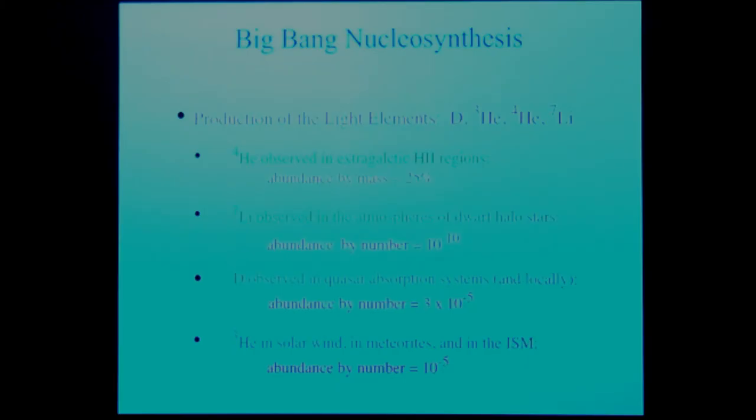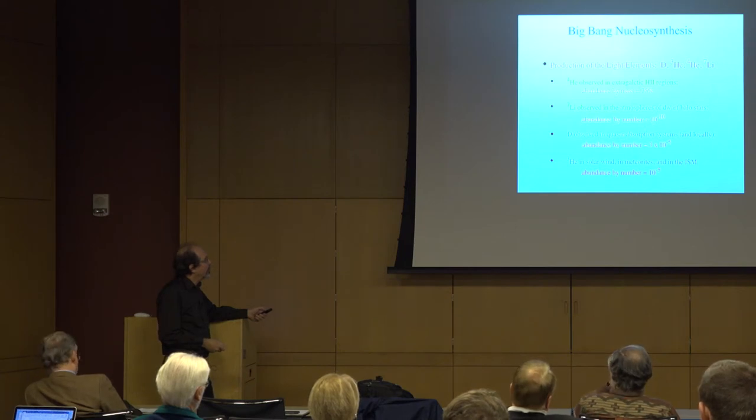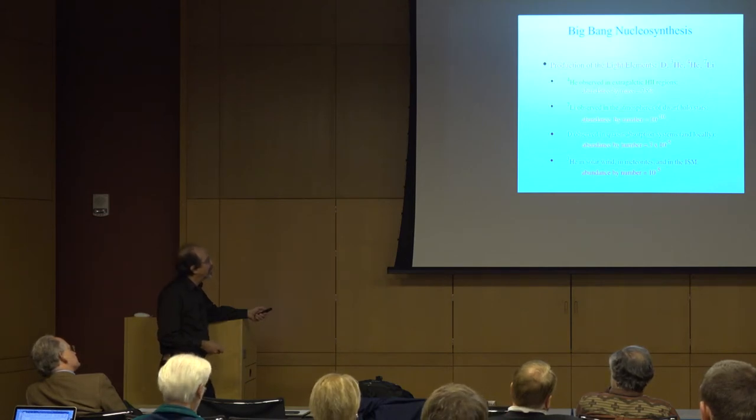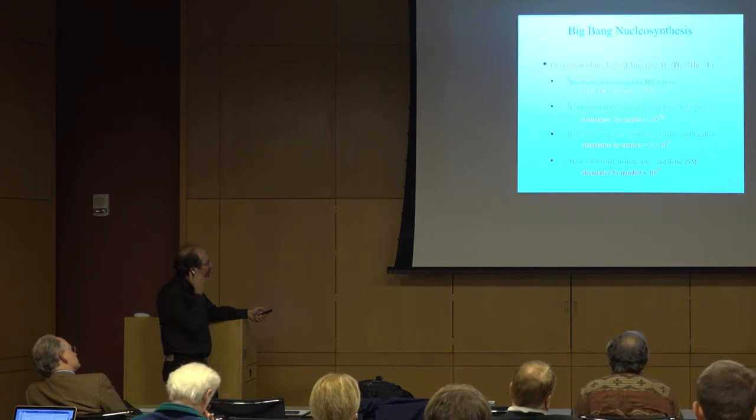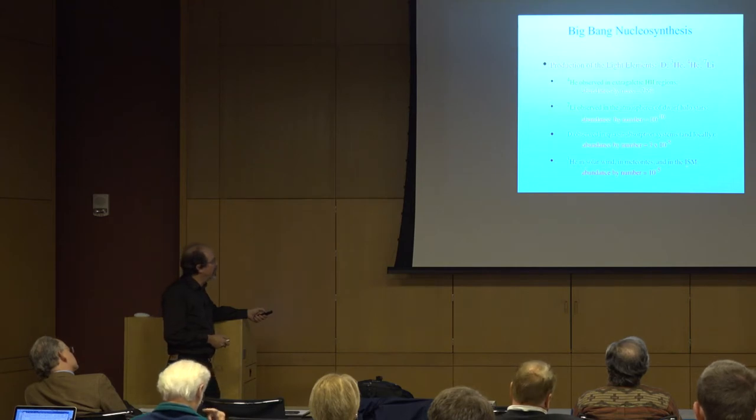So nucleosynthesis, how do we treat it? It predicts the light elements, as I said, deuterium, helium-3, helium-4, lithium. As I said, the helium-4 abundance is roughly 25% by mass. It's observed in extragalactic H II regions. Lithium is about 10^-10 in halo dwarf stars. Deuterium, now best measured in quasar absorption systems. There are other measurements, but the ones you can trace back to the Big Bang are from these quasar absorption systems at the level of a few times 10^-5. And then the helium-3, sort of in solar wind, meteorites, the interstellar medium, it's also around 10^-5, which is about the BBN value. But again, going back to that '76 paper of Gary, it's not clear how you attach any of the measurements to the BBN.